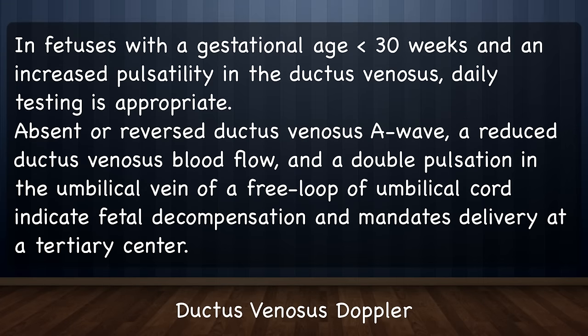In fetuses with gestational age less than 30 weeks and increased pulsatility in the ductus venosus, daily testing is appropriate to indicate absent or reverse ductus venosus A wave. A reduced ductus venosus blood flow and a double pulsation in the umbilical vein of a free loop of umbilical cord indicate fetal decompensation and mandate delivery at a tertiary care center.